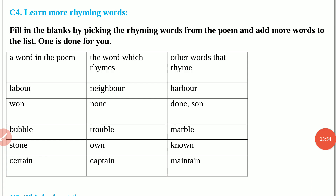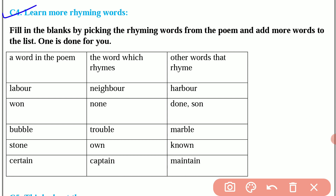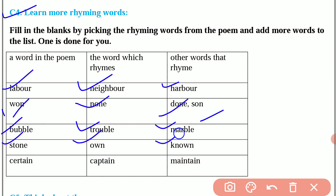Question number 4: Learn more rhyming words. Labour, neighbour, harbour. Own, known, done, son. Bubble, trouble, marble. Stone, own, known. Sultan, captain, maintain. These are rhyming words.